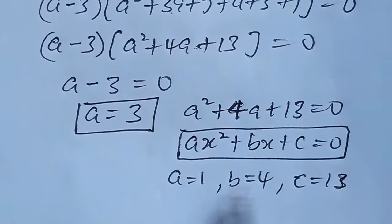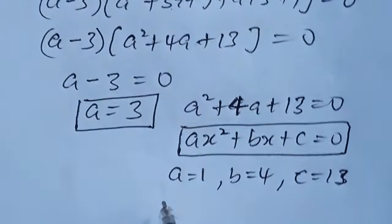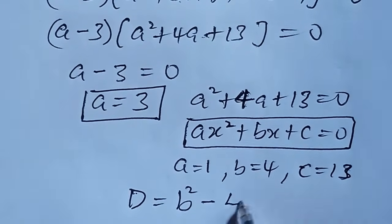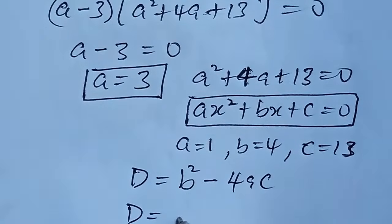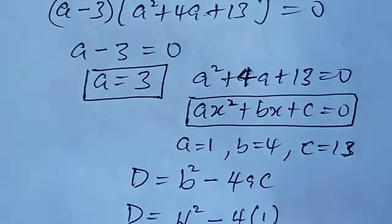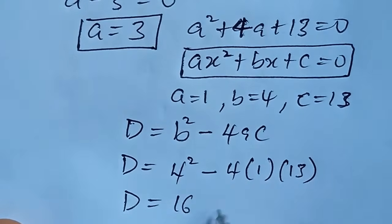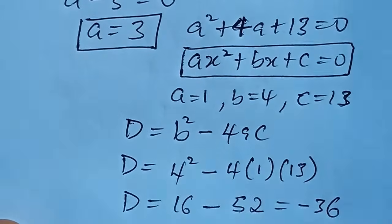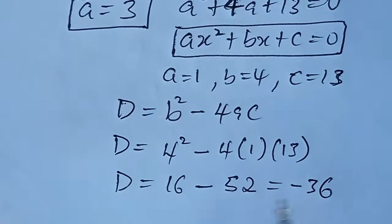So to solve this we first determine the discriminant to know whether we are going to have a real solution or a non-real solution. The discriminant D is equal to b squared minus 4ac. Substituting, the discriminant gives us 16 minus 52, which is equal to minus 36. Since the discriminant gives us a negative value, it means that there will be no real solution.